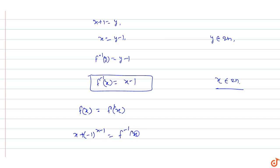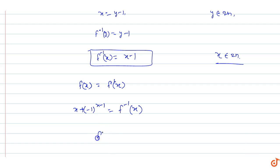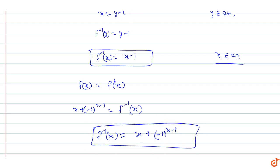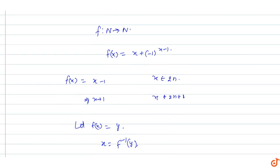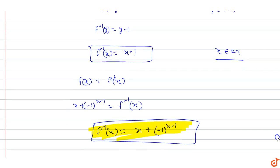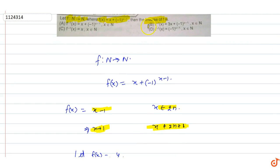Therefore f inverse of x equals x plus (-1) raised to power x minus 1, which is the same form as the original function f(x). So the inverse of f(x) is f inverse of x equals x plus (-1) raised to power x minus 1. Option A will be the correct answer — the inverse of the function f(x) is x plus (-1) raised to power x minus 1.